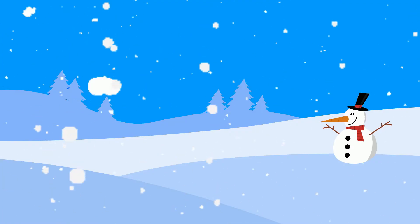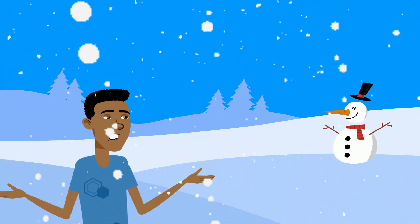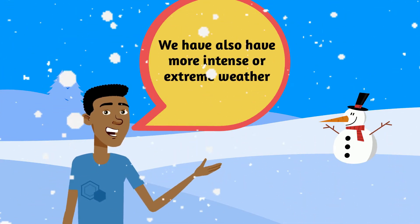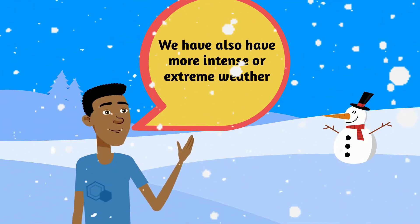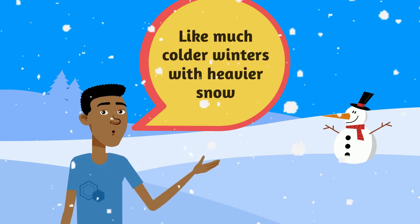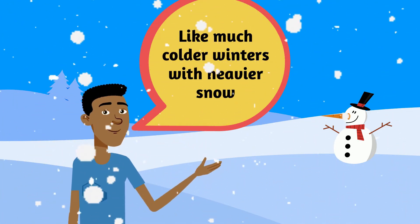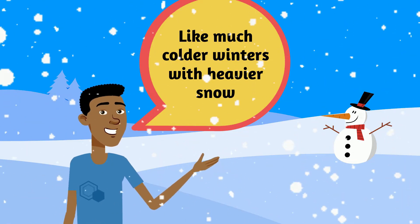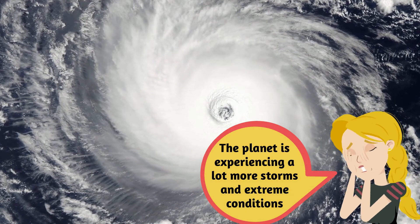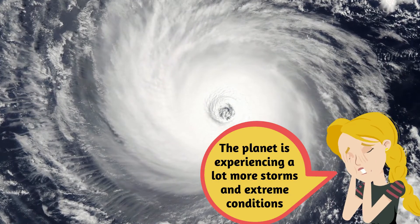A question you may ask is: if the earth is getting warmer, why do we sometimes still have very bad winters? The answer is that we also have more intense or extreme weather with climate change. We can have much colder winters with much heavier snow. Another problem is that the planet is experiencing a lot more storms and extreme conditions.